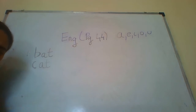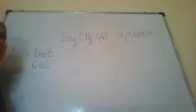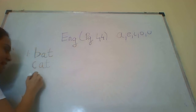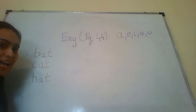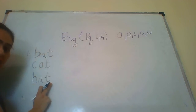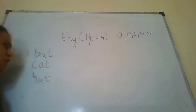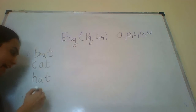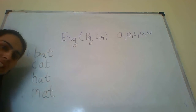Can you think of some more words which have A in them? Let's write, for example, H-A-T. So what is H-A-T? H-A-T is 'hat'. Then let's write some more new words. Like for example we have M-A-T. So what is M-A-T? M-A-T is 'mat'.